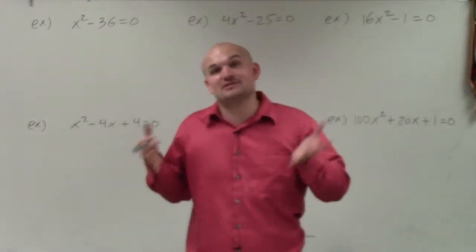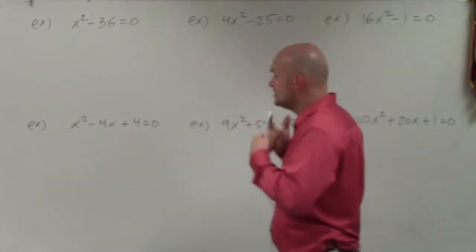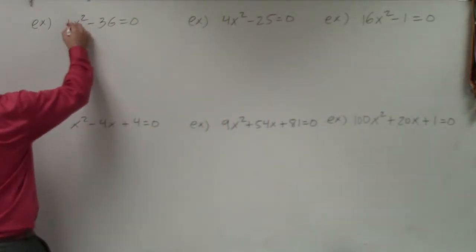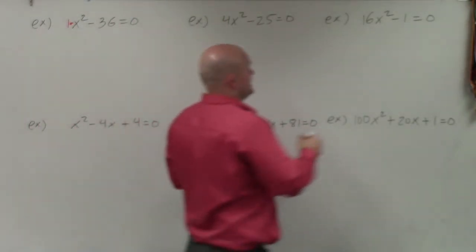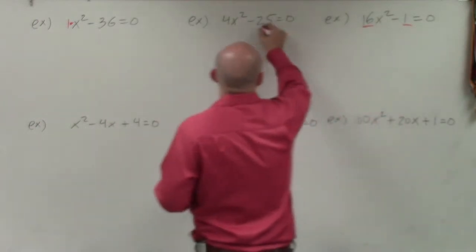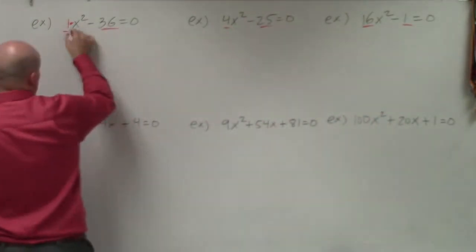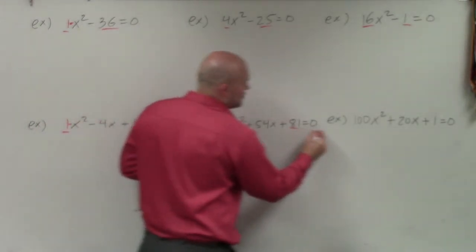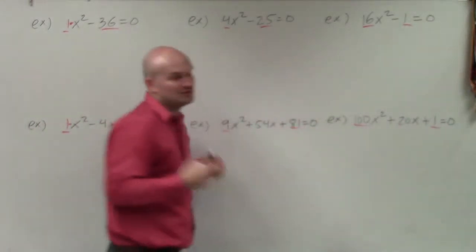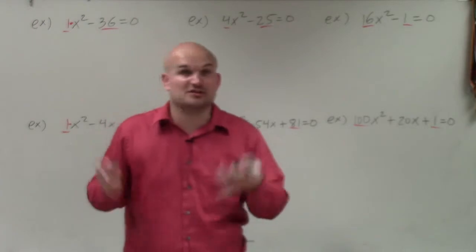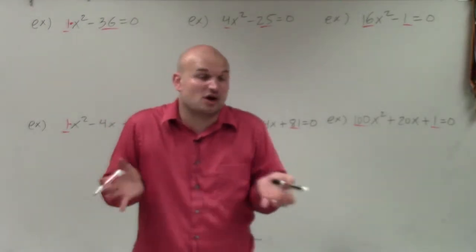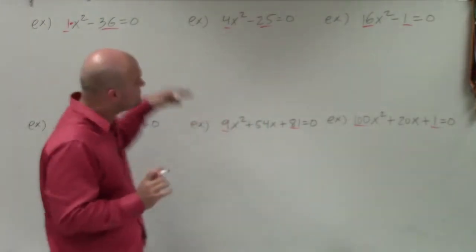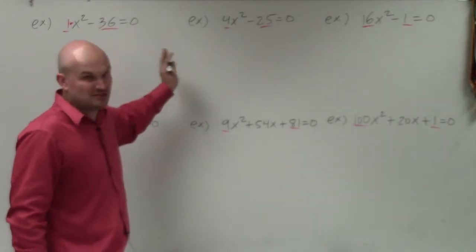Square numbers are what make the special factoring technique so special. When you're dealing with special factoring techniques, notice how the terms — the numbers that we're using — are what we call square numbers, meaning those numbers you can take the square root of. So when you have to factor or solve an expression using factoring, look for square numbers, because when you have square numbers, we can apply the special factoring techniques.